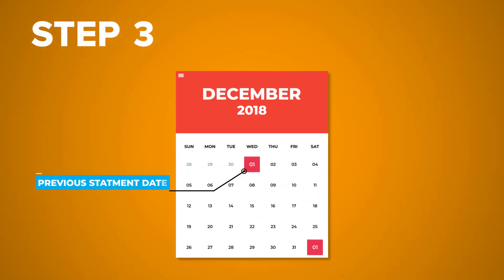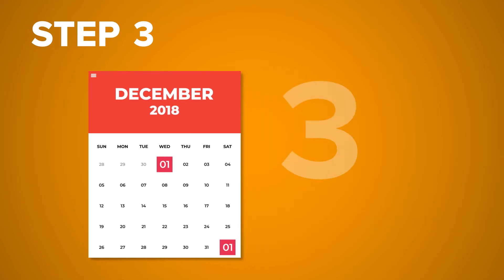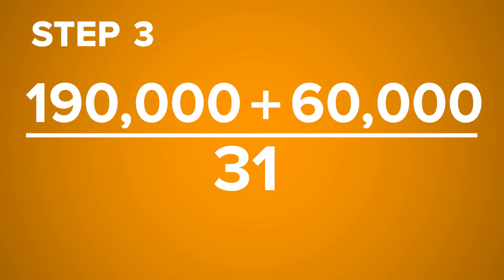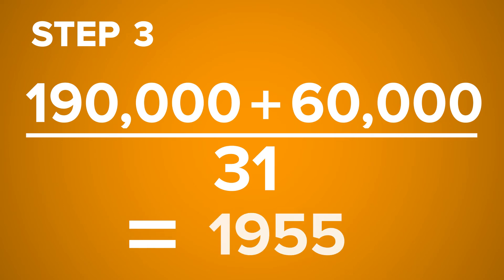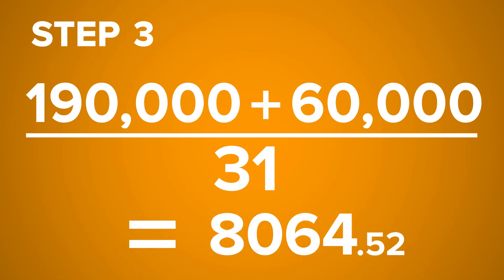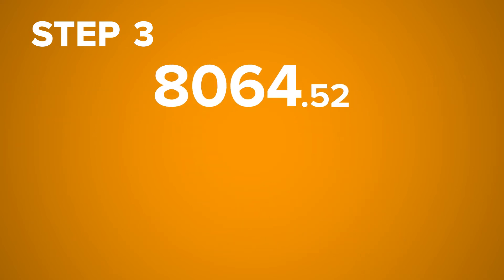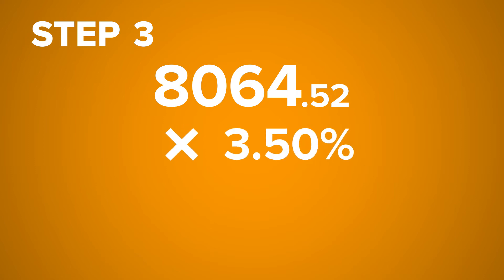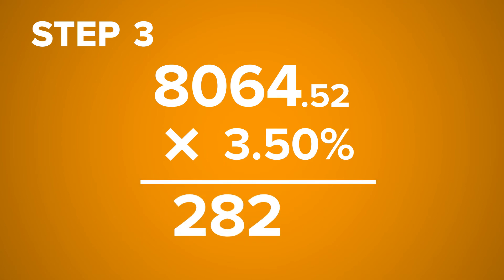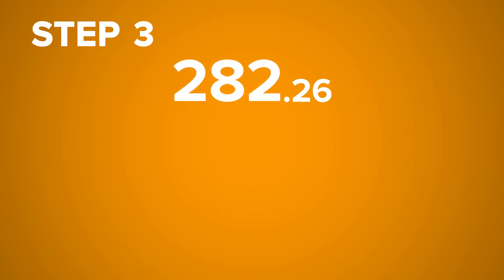Step 3. Add the number of days from the previous statement date of December 1 to the current statement date, that is January 1 — in total, these are 31 days. Add the balances from steps 1 and 2 and divide by the number of days from the previous to the current statement date. That is equal to 8,064 pesos and 52 centavos. The total finance charge for the current statement date is 8,064 pesos and 52 cents multiplied by the monthly interest rate of 3.50 percent, which amounts to 282 pesos and 26 cents. This is the total interest incurred for the current billing cycle.